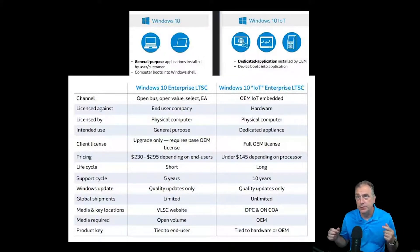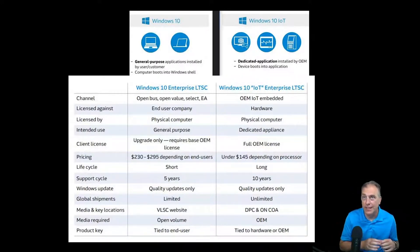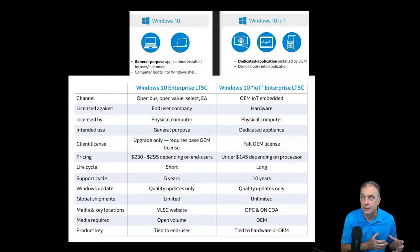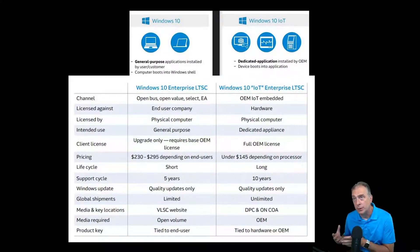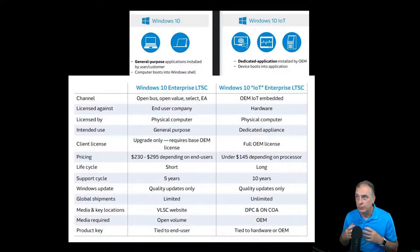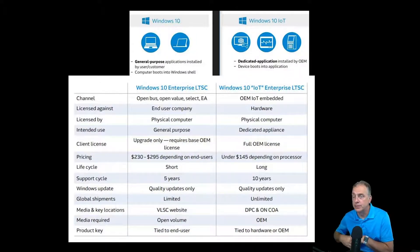They both get quality updates, which are your security patches and hot fixes. They don't get any new feature updates. Global shipments are extremely limited for open volume because you have to buy the licenses in the name of the end user, and you also have to procure from an authorized open volume distributor within the region of the end user. Globally, that becomes a nightmare. In comparison, the IoT OEM version for global shipments is unlimited — you buy the products from Arrow within the region you're in, for America or Europe, then build your appliance, and sell and ship it globally with no restrictions.